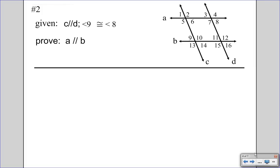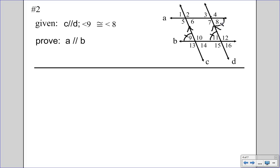On this next problem, pause the video and try it out — it's very similar to the proof you just did. Let's go ahead and start by outlining the proof. C and D are parallel lines — that's my given. Angle 9 is congruent to angle 8. Here are my two parallel lines, cut by transversals B and A. If this is my transversal, then I know that 9 has to be congruent to 11 because those are corresponding angles. So if 9 is congruent to 11 and 9 is also congruent to 8, then by the transitive property 11 and 8 would have to be congruent. And if 11 and 8 are congruent, that means A has to be parallel to B, because if alternate interior angles are congruent, then the lines are parallel.